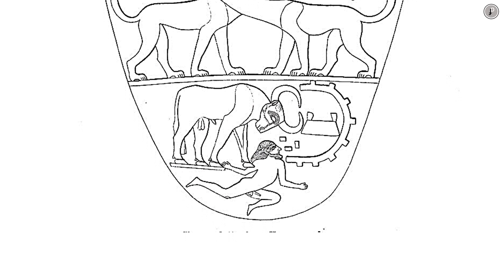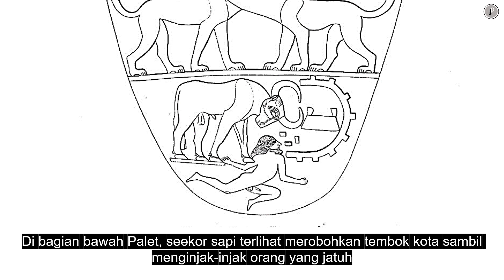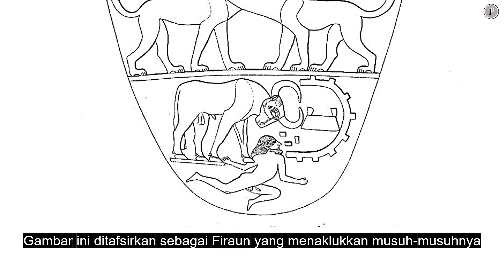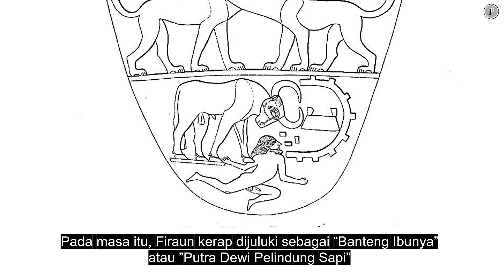At the bottom of the palette, a cow is pictured knocking down city walls while trampling on fallen people. This image is interpreted as a pharaoh who conquered his enemies. At that time, the pharaoh was often called the bull of his mother, or as the son of the patron cow goddess.